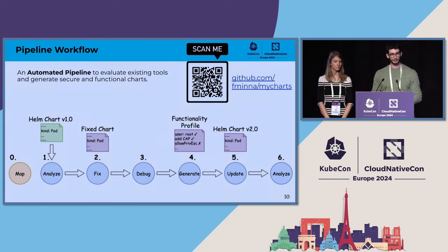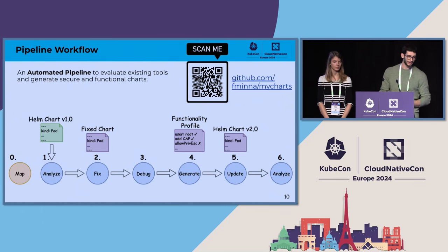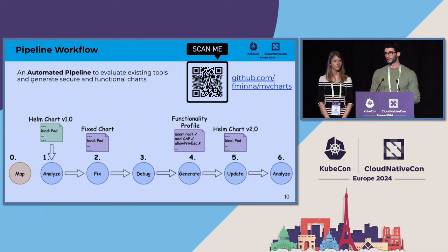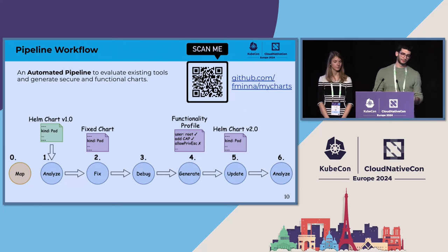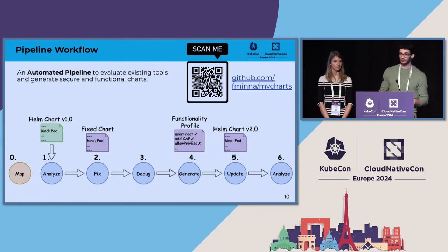Step two: we automatically fix all these misconfigurations. Step three is a debug step to make sure the fixing was done correctly — the output of the first tool will be zero remaining misconfigurations. Step four: we generate a functionality profile — basically a list of the functionalities needed by your application. Step five: we add back functionalities that could have been removed during the fixing. And finally, step six: we run another tool to find the remaining misconfigurations.